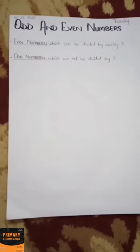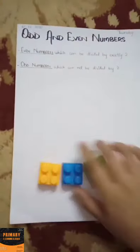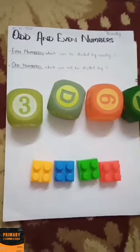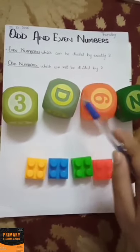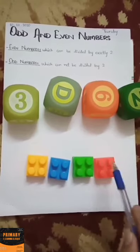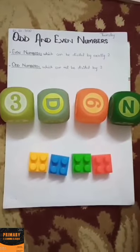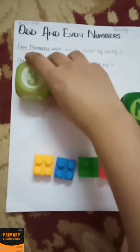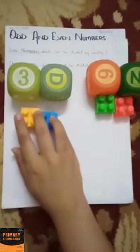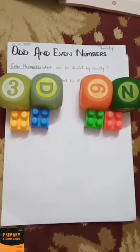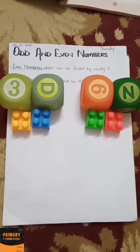Now let's count another number using a different type of blocks. Count all these blocks: one, two, three, four, five, six, seven, eight — there are total eight blocks. Now I will divide these blocks into two equal groups: one, two, three, four — and one, two, three, four. As you can see, I have divided these eight blocks into two equal groups, so eight is an even number.